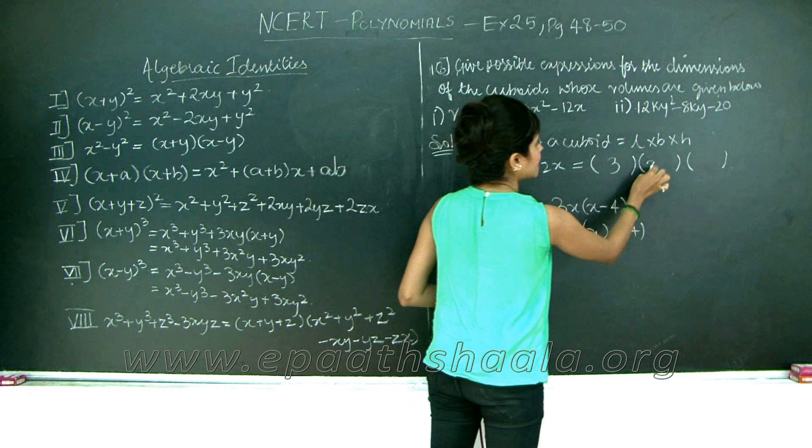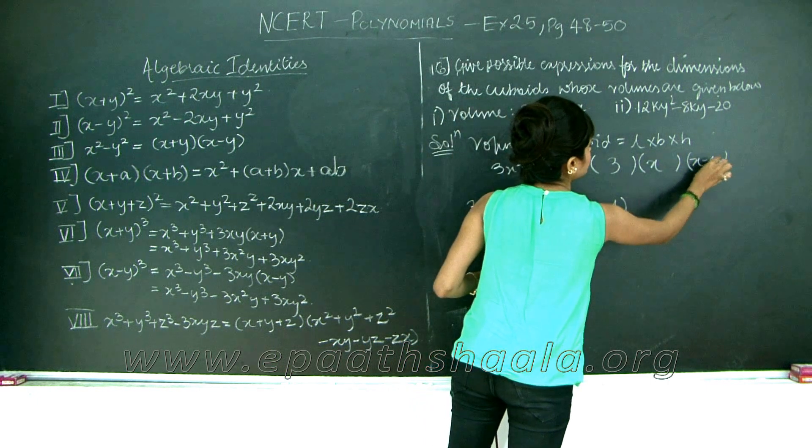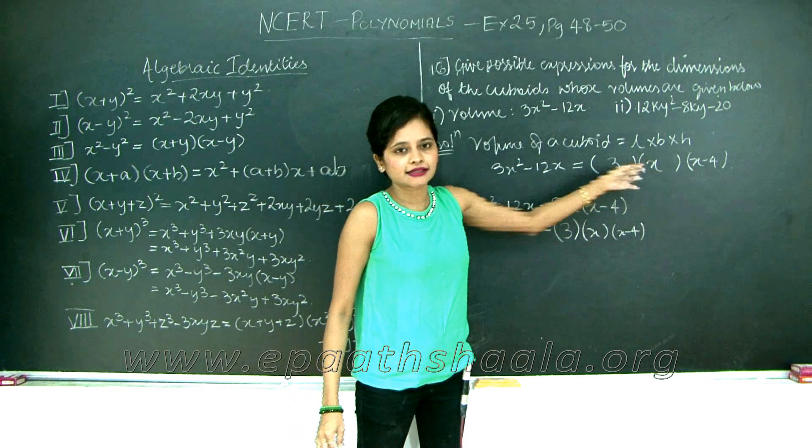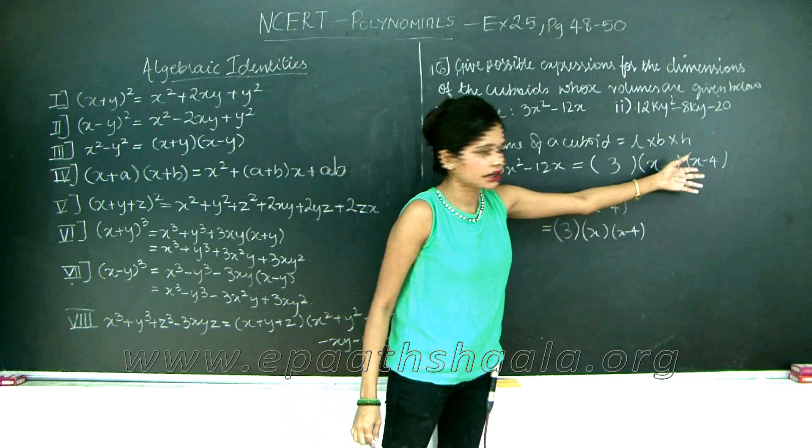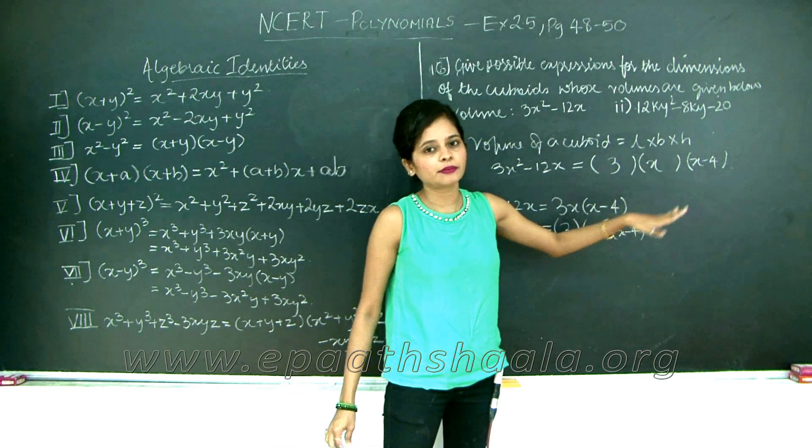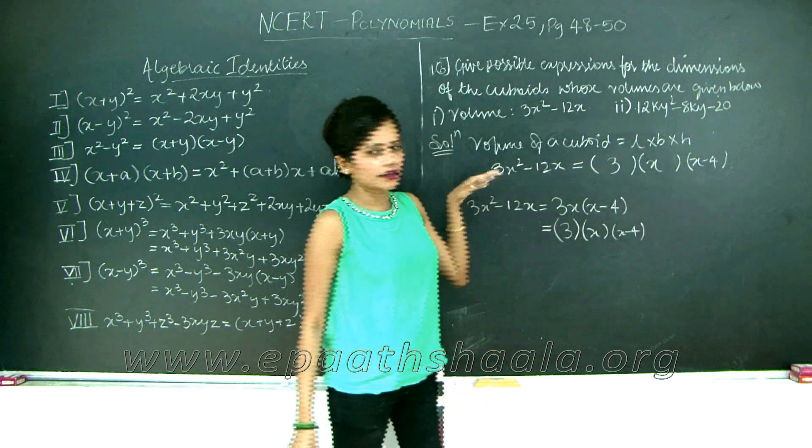My length becomes let's say 3 units, x units and x minus 4. You can swap any of these. For example, you can just say that x is the length, 3 is the breadth and x minus 4 is the height or any way. Because we just have to find the factors of this polynomial.